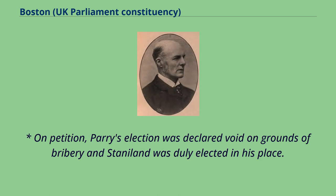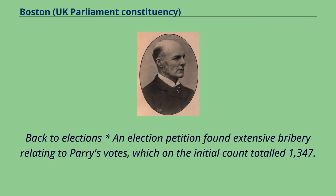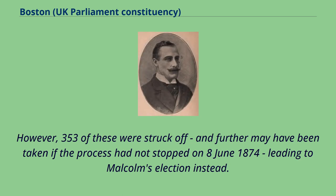On petition, Perry's election was declared void on grounds of bribery, and Staniland was duly elected in his place. Staniland then resigned, causing a by-election. An election petition found extensive bribery relating to Perry's votes, which on the initial count totalled 1,347. However, 353 of these were struck off, and further votes may have been removed had the process not stopped on 8 June 1874, leading to Malcolm's election instead.